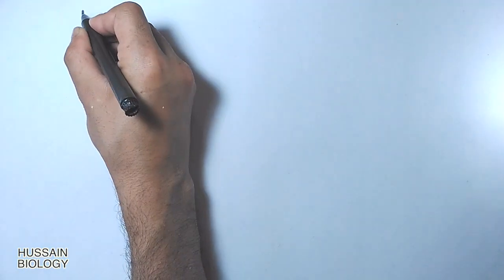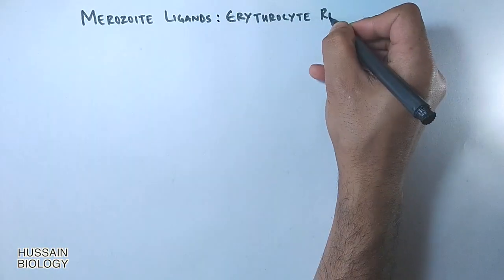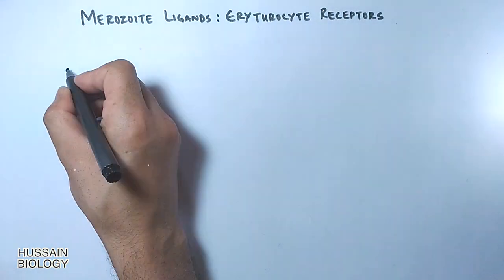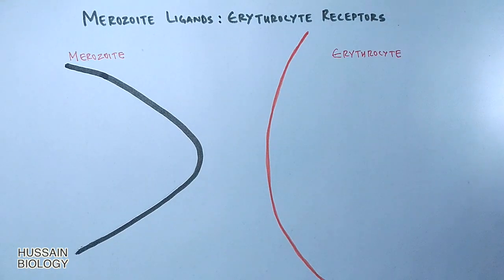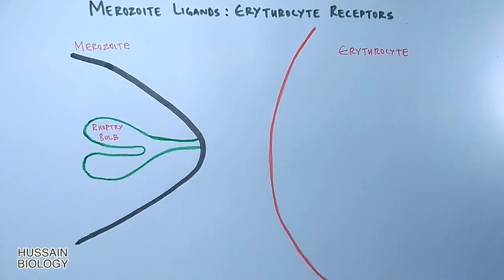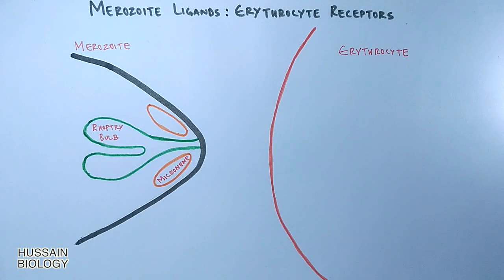Now let's see the interactions between Plasmodium falciparum merozoite ligands with the RBC receptors. On the left you can see the Plasmodium and on the right we have the erythrocyte cell. In the Plasmodium merozoites we see it has apical organelles in the form of rhopteries and micronemes.